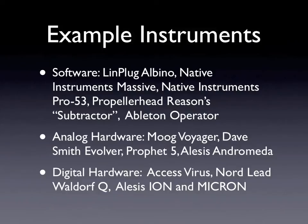And then you've got your digital hardware, which is usually called virtual analog, which is a digital emulation of real analog hardware. Good examples of those would be your Access Virus, your Nord Lead, the Waldorf Q, and then the Alesis Ion and Micron, which are more budget versions of those things. So this is the sort of instrument you're going to need in order to take advantage of this tutorial.